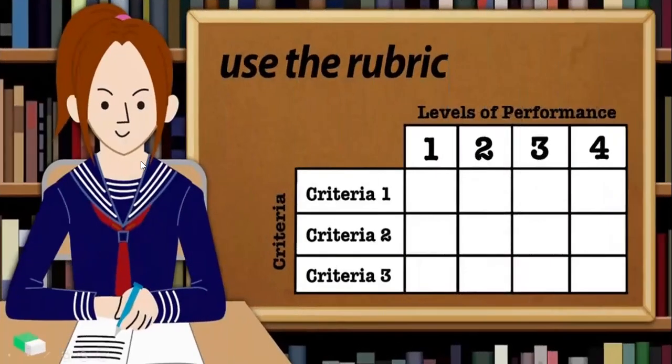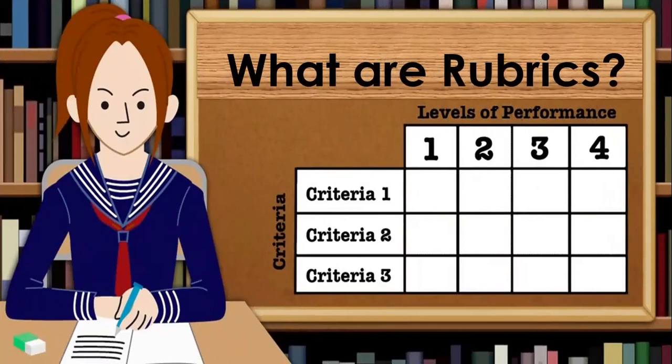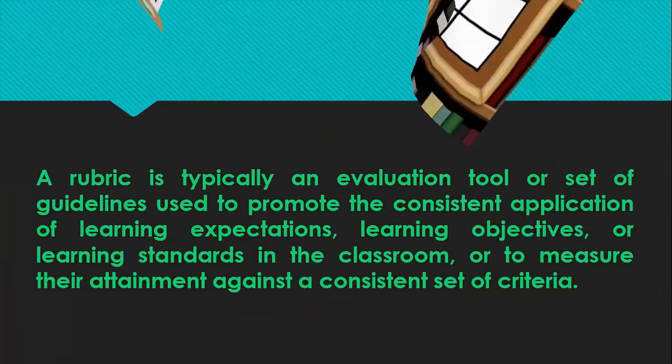Hello friends, today I'm going to tell you about what rubrics are, and I will give you some examples of rubrics as well. You can see a picture with a table in front of you. Vertically, you can see some criteria written, and in the columns you can see levels of performance. Criteria and level of performance should be decided by the teacher, department, or school.